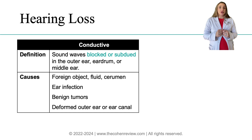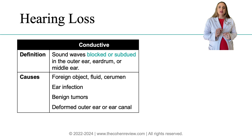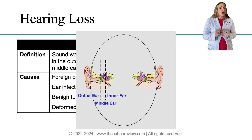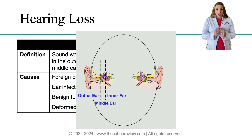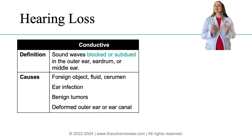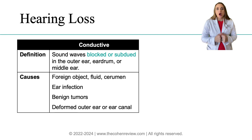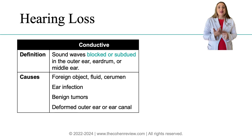Here are the differences between conductive versus sensorineural hearing loss. Conductive hearing loss occurs when sound waves are blocked or reduced in intensity as they travel through the outer ear, eardrum, or middle ear. Causes? Think of an object obstructing the flow of sound — for example, fluid in the middle ear from a cold or allergies, ear infections like otitis media or externa, benign tumors, cerumen, or an object stuck in the ear such as a child inserting a pebble.